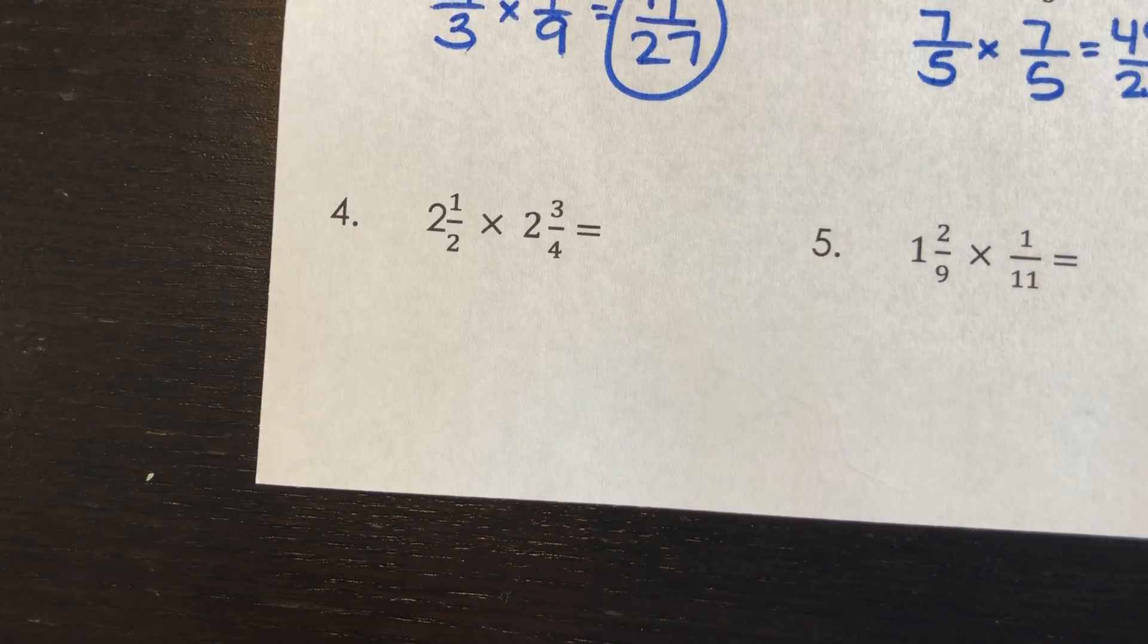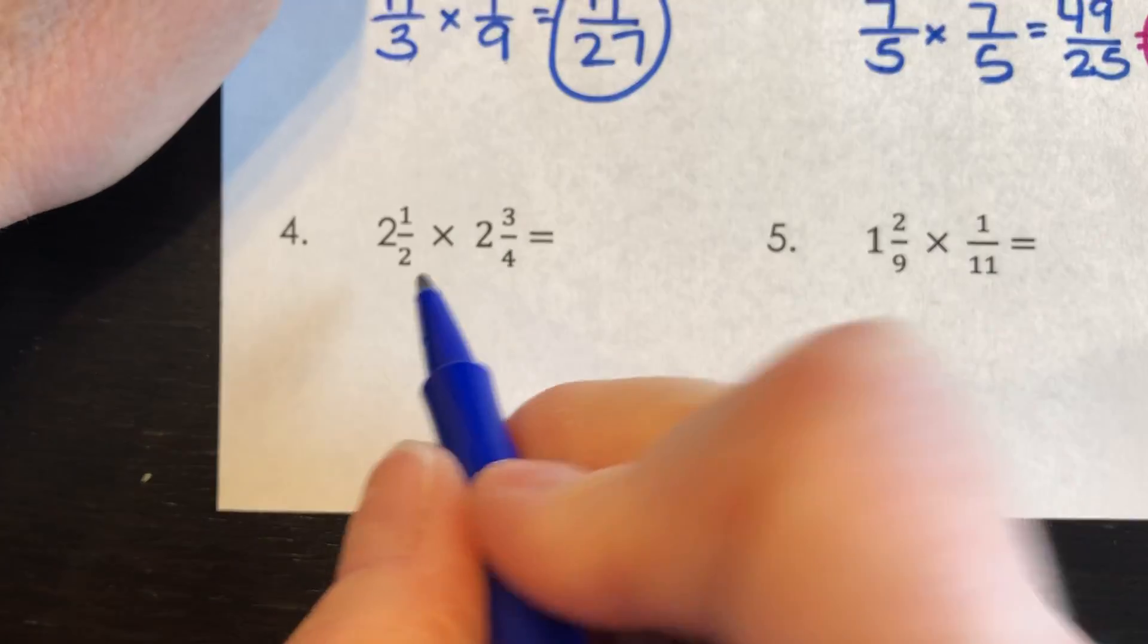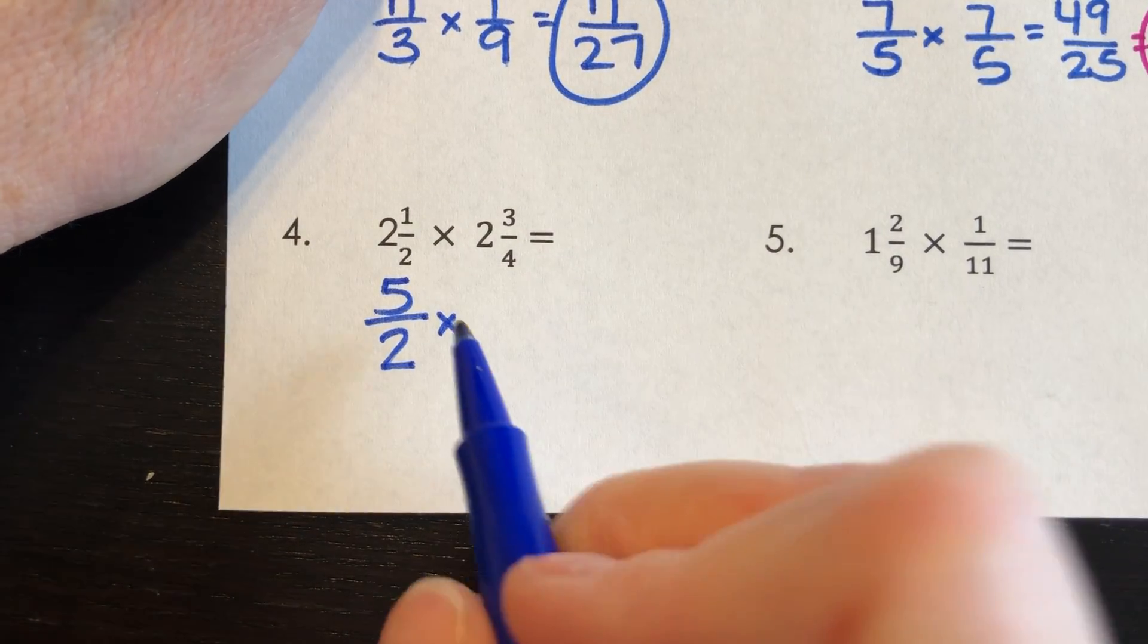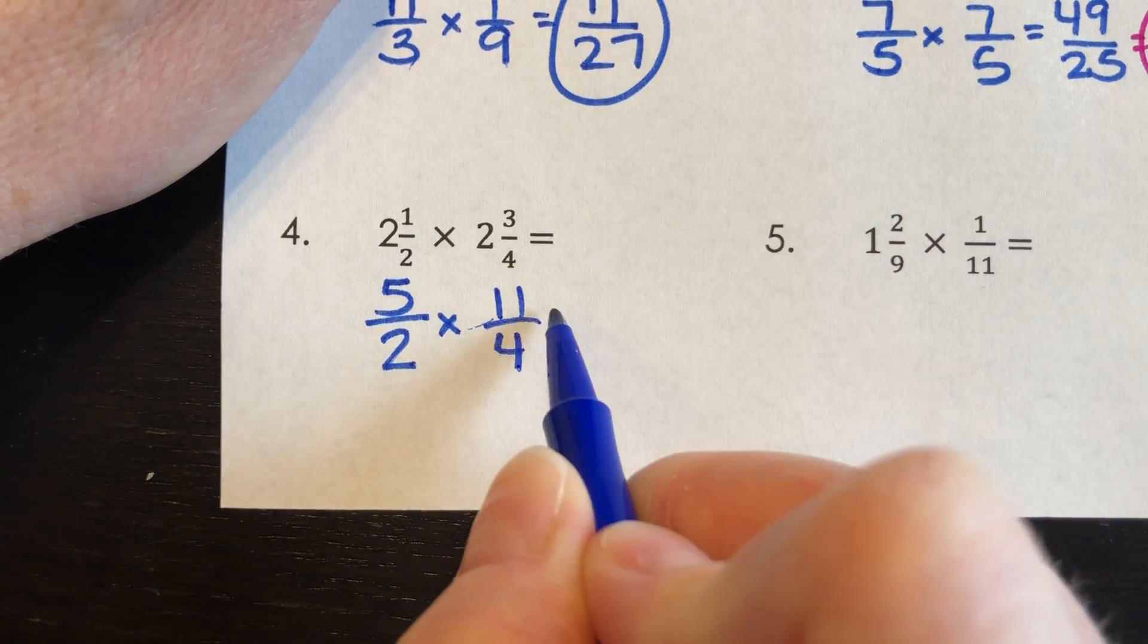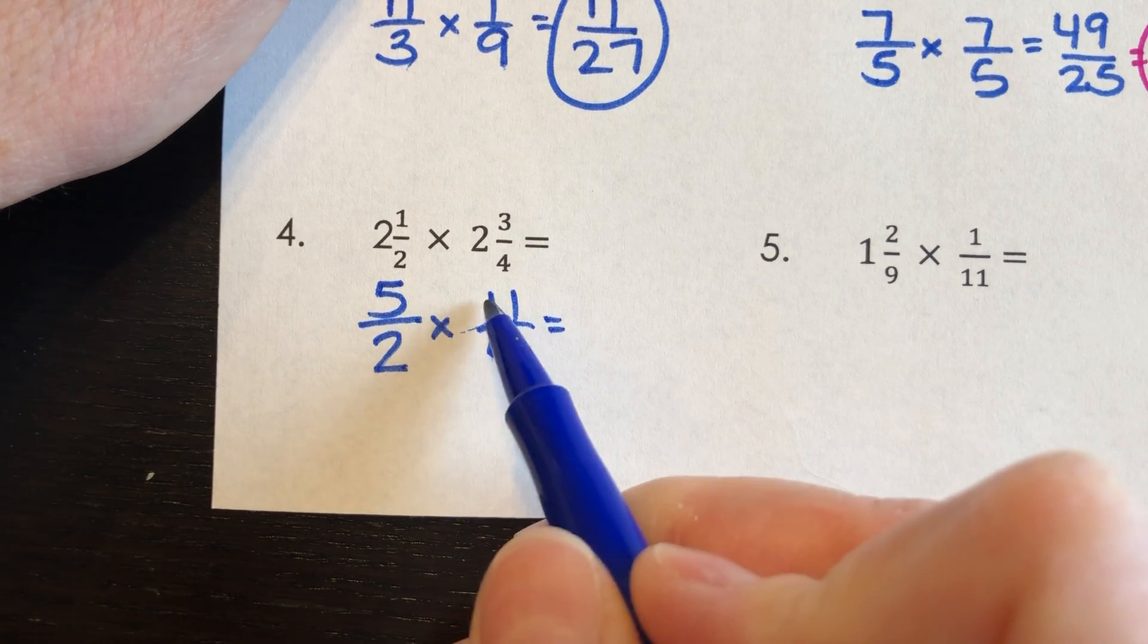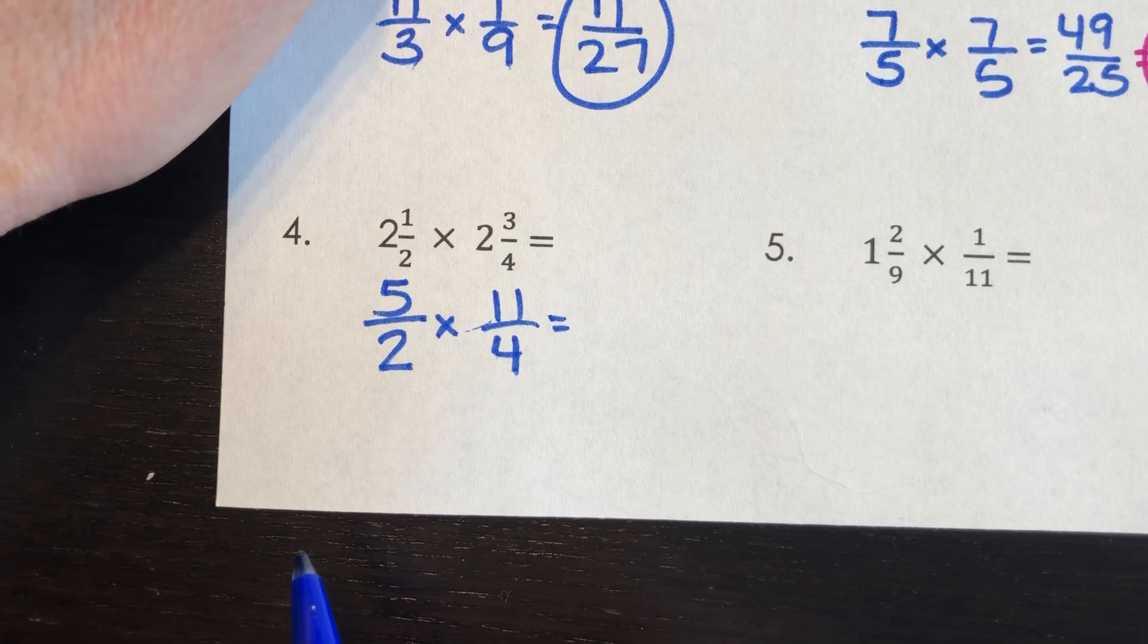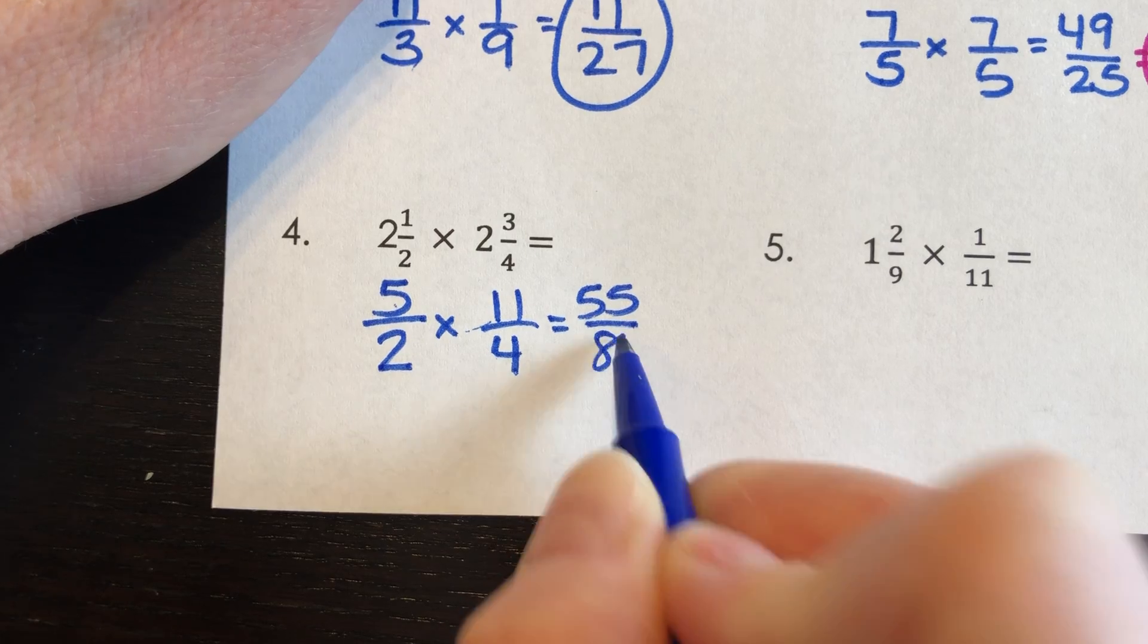Number 4. 2 1/2 times 2 3/4. So I'm going to go ahead and change those to improper. So 2 times 2 is 4 plus 1 is 5. And I keep my denominator. And 4 times 2 is 8 plus 3 is 11/4. Now when I look at this, I can't do anything with 2 and 11. And I can't do anything with 5 and 4. So I just need to multiply across. 5 times 11 is 55. And 2 times 4 is 8.